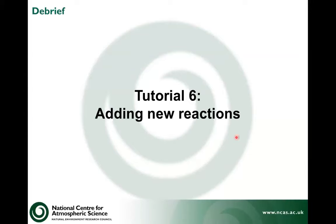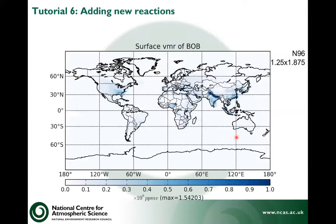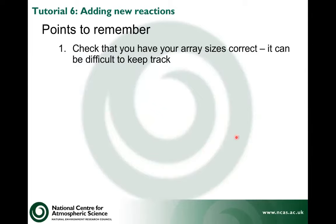When you finish that, a little debrief: we should now start seeing things appearing in Bob. Once the reaction appears, we're able to turn Alice into Bob — at N96 this is what Bob might look like. Things to remember: you need to make sure that your array sizes are correct. It can be difficult to keep track when adding new reactions because the reaction list is very long.